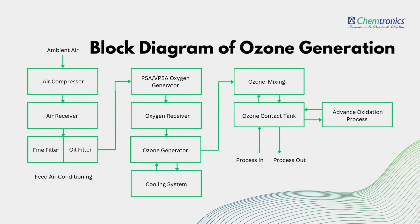First, ambient air is compressed and stored in an air receiver. Then it is filtered for any physical particles, dust and oil, and fed to the oxygen concentrator. The oxygen concentrator works on vacuum pressure swing adsorption. This oxygen is stored in a receiver, and from here, oxygen is fed into the ozone generator, producing a high ozone concentration. The water cooling system provides necessary cooling to the ozone generator.